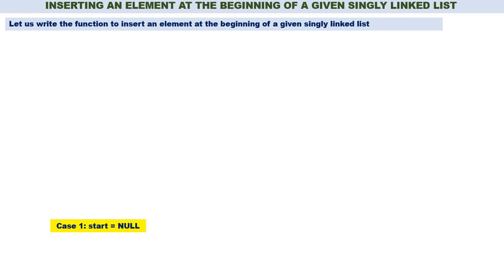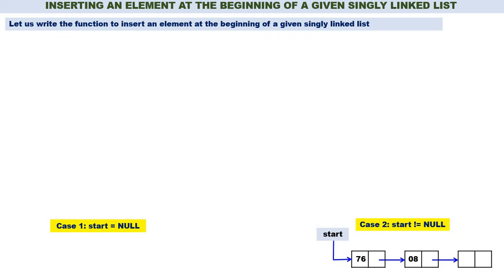Let us write the function to insert an element at the beginning of a given singly linked list. Case 1: start is equal to null. Case 2: start is not equal to null — there is a linked list and start contains the address of the first node 76, 08, 54. The function is: struct node* insert_sll_beg — meaning we are inserting an element at the beginning of a singly linked list. The two parameters passed are the starting address of the linked list (struct node* start) and the element to be inserted (int item).